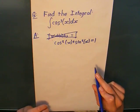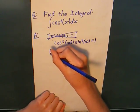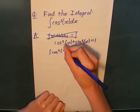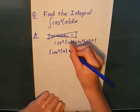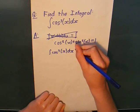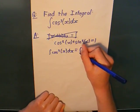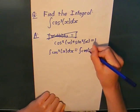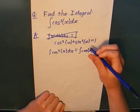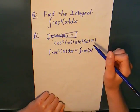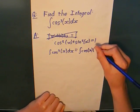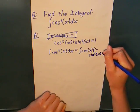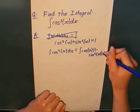So I can say that I've got integral cos³(x)dx equals integral of cos(x) times cos²(x), which I know by rearranging this is just 1 - sin²(x) dx.